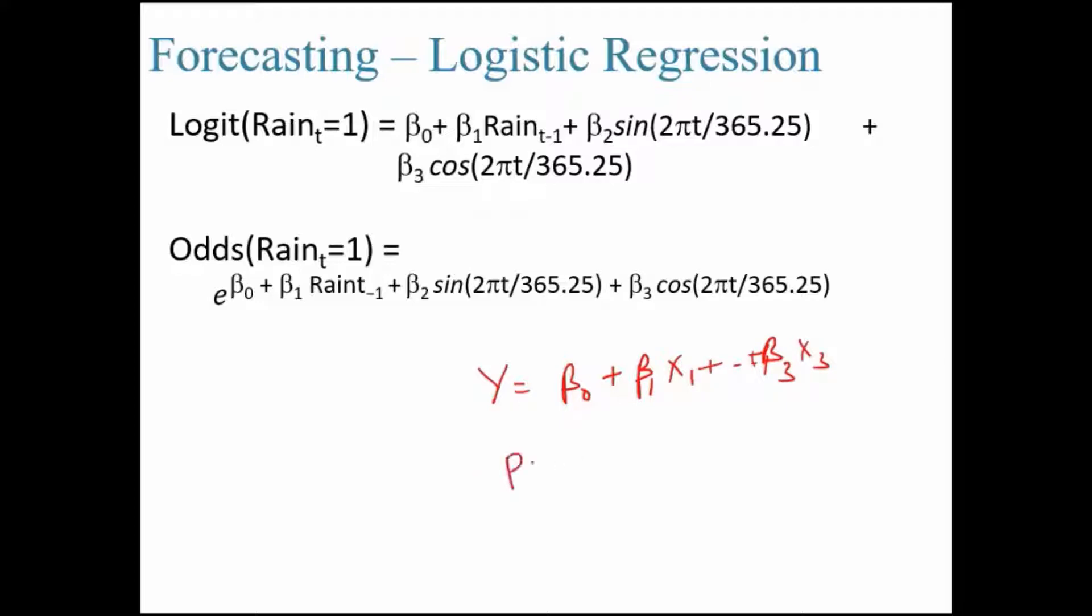Now, once you solve this, you will put it in this equation e^y by 1 plus e raised to the power y. This is probability. Probability by 1 minus p is called as odds and odds will be equal to e^y. When you solve it, you will get this. And if you apply log on both sides, you would get back this equation and that's called as logit. If you apply log for the odds.